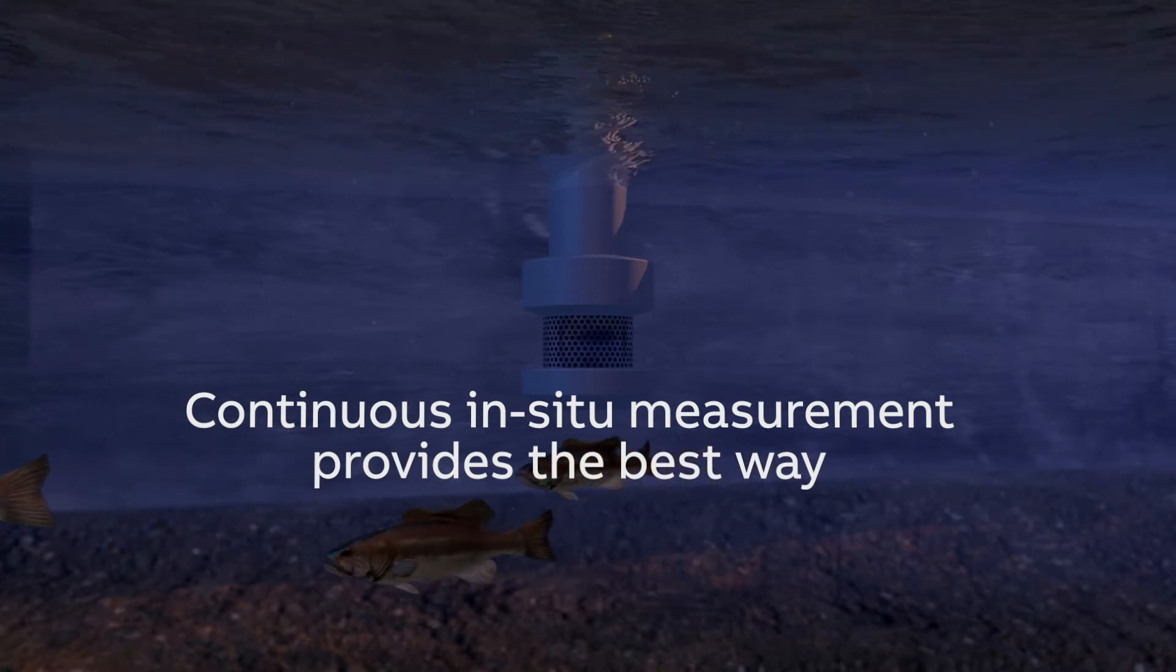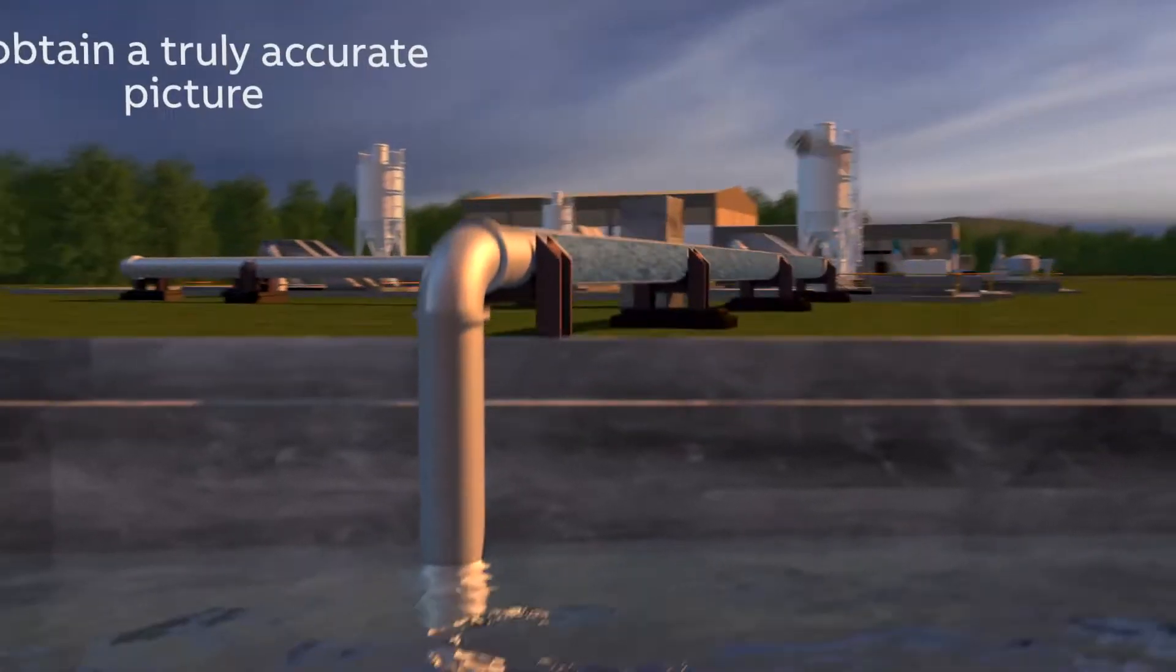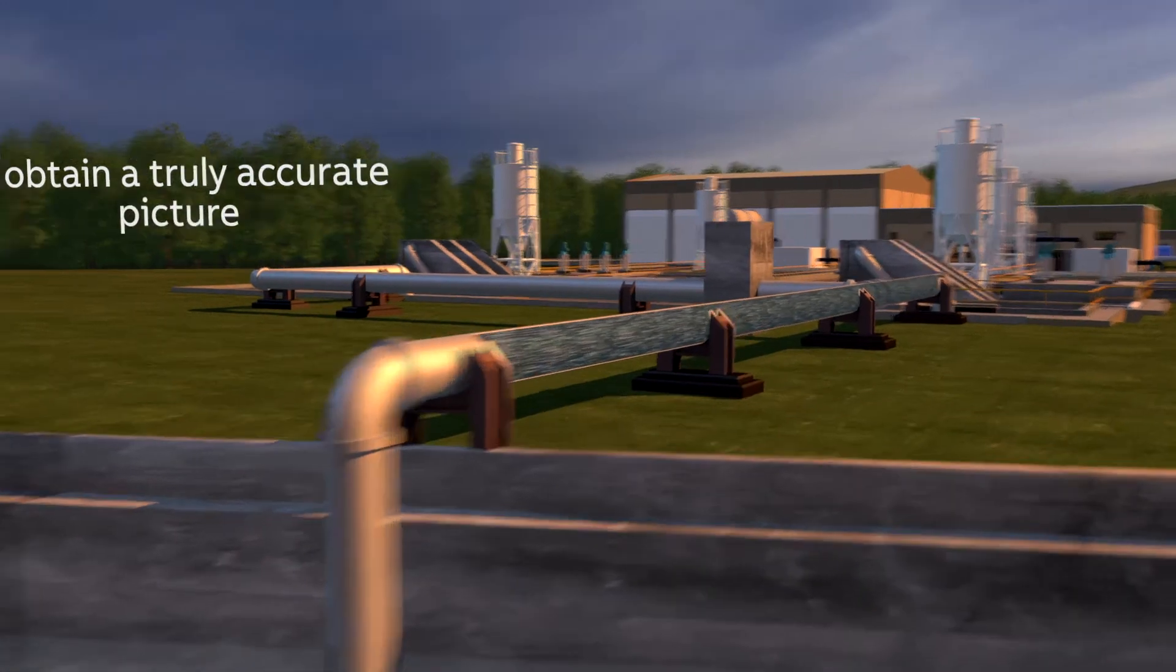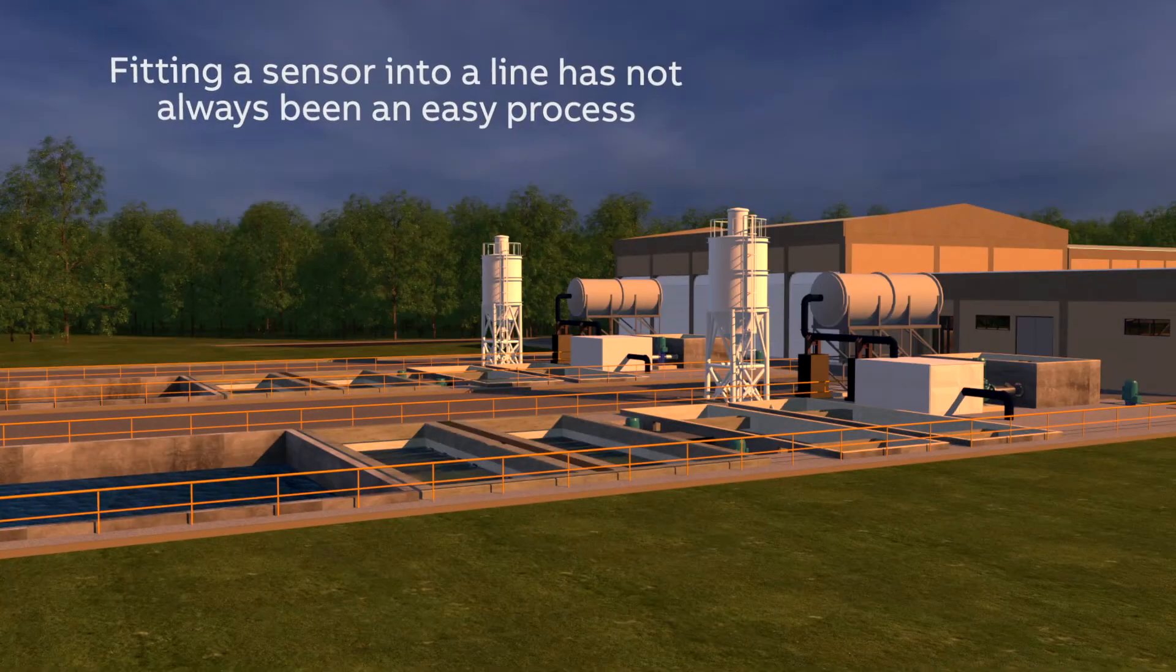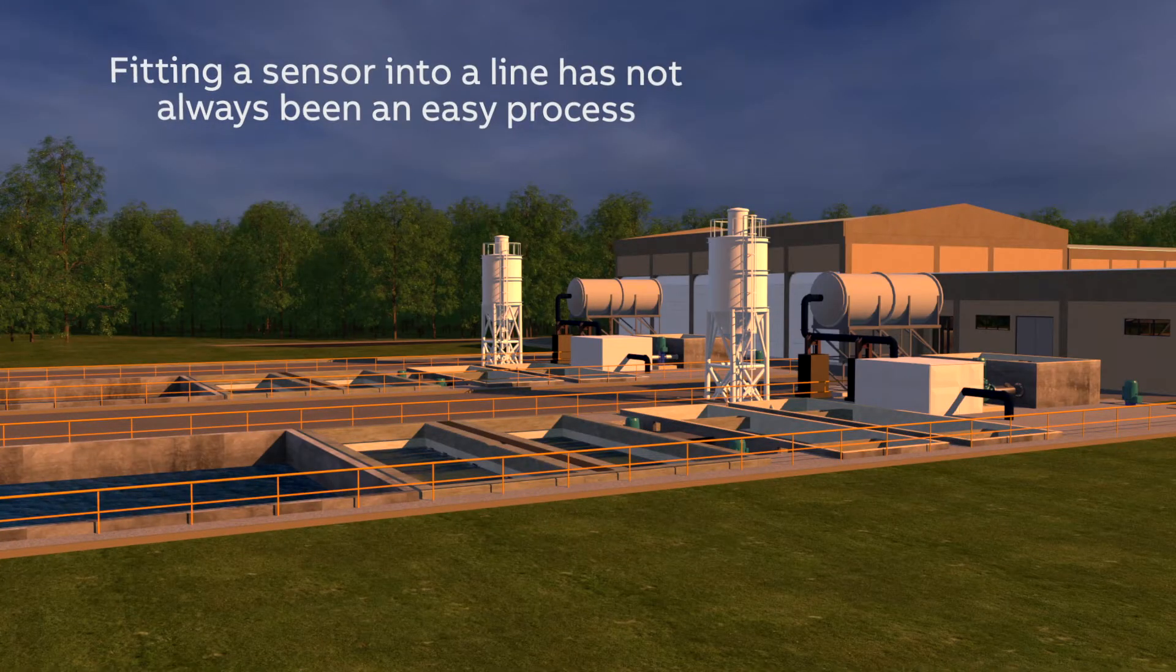Continuous in situ measurement provides the best way to obtain a truly accurate picture of what's happening within a pipeline. However, fitting a sensor into a line has not always been an easy process.